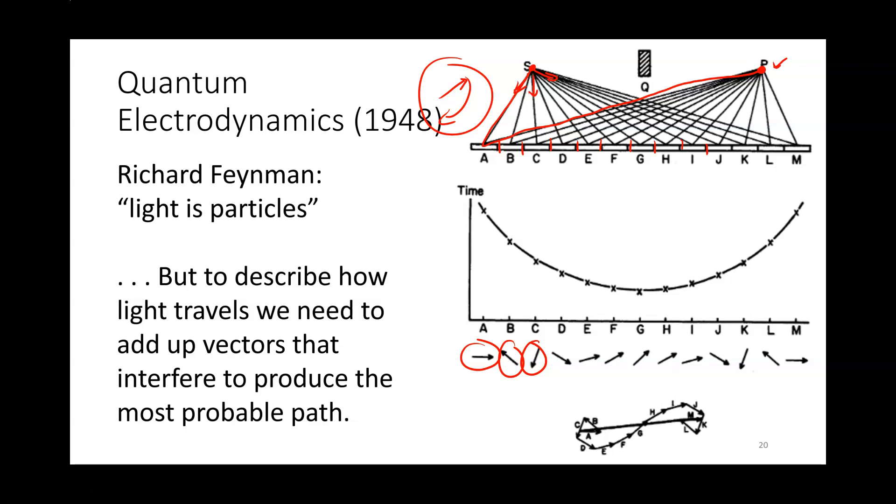Now, to get the total probability of the light traveling from the source S to the location P where it's detected, we need to add all these guys up as vectors. When you do that, you'll find out that most of these guys in opposite directions cancel, whereas in the middle you get the biggest contribution to the vector. The length of this final arrow is proportional to the probability that light actually gets from S to P.